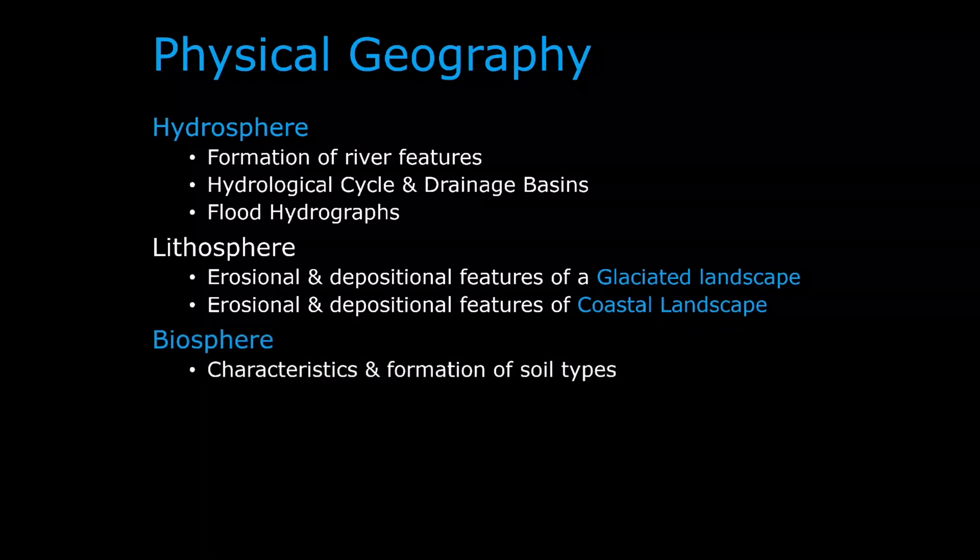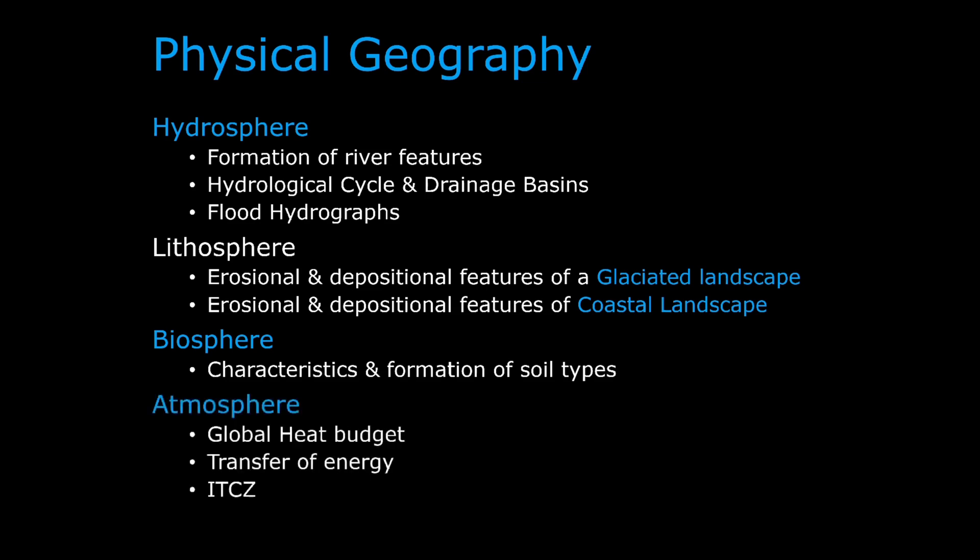Biosphere contains the characteristics and formation of different soil types, why that's important and why it's relevant. Our final physical topic is atmosphere, looking at the global heat budget, how energy is transferred across our planet from the equator to the poles and back, how ocean currents move, and something called the ITCZ - the Intertropical Convergence Zone - what characteristics it has and how it affects people that live nearby.